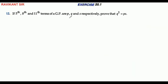If 5th, 8th and 11th terms of a GP are P, Q, and S respectively, prove that Q squared equals P times S.